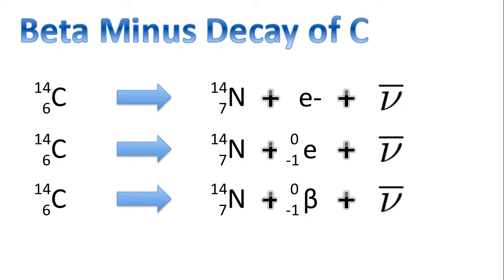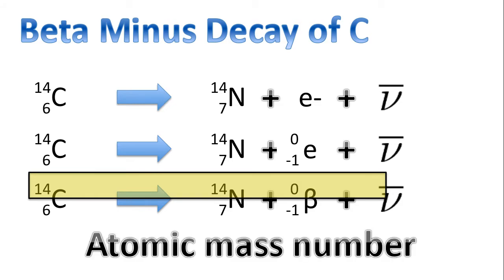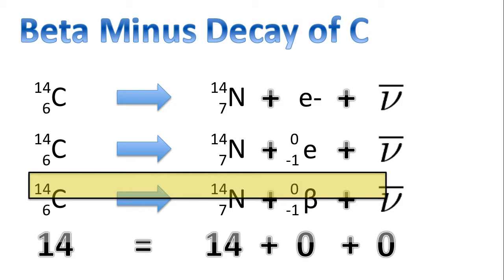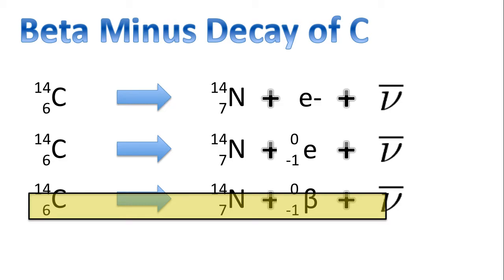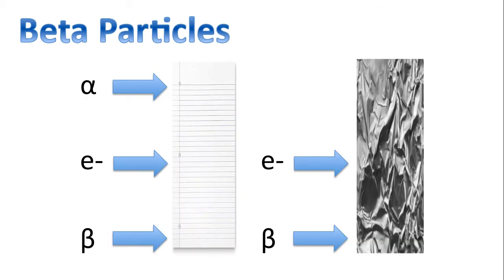You may also see this equation written in another form. Notice that 14 on one side equals 14 on the other — the atomic mass number does not change: 14 equals 14 plus zero plus zero. Reviewing the charge row, charge is conserved: 6 equals 7 plus negative 1 plus zero. Comparing alpha particles to beta particles: alpha particles usually cannot pass through paper, but beta particles can. However, beta particles cannot pass through aluminum foil.